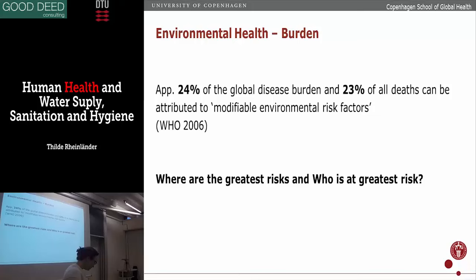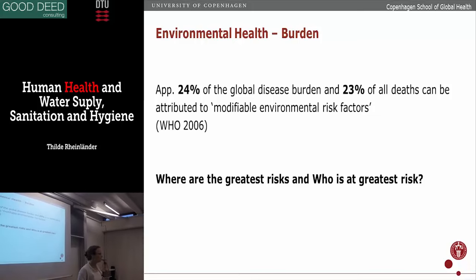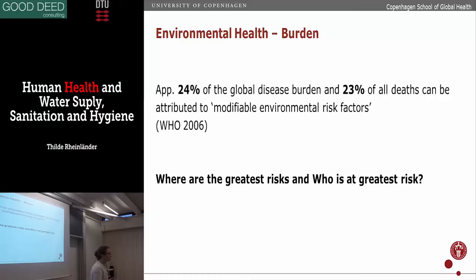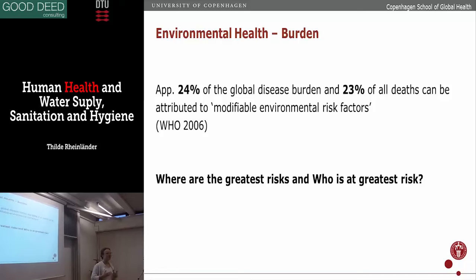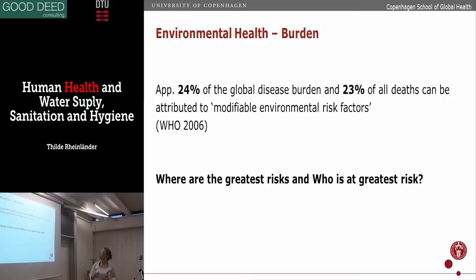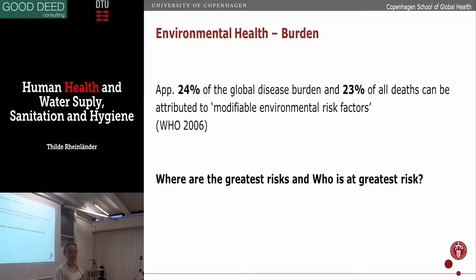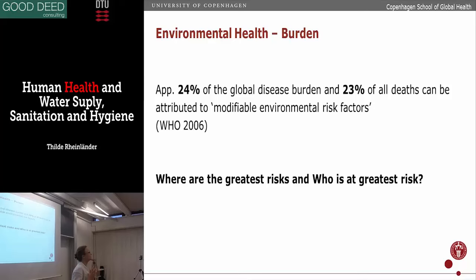I was actually shocked when I started to read these reports again to see how high these numbers are. 24% of the disease burden in the world is caused by environmental factors — that's a quarter of all disease in the world, and lots of that disease burden can be prevented. 23% of all deaths are caused by modifiable environmental factors. That's an enormous number that we here as environmental engineers can actually help to prevent by controlling factors in the environment.